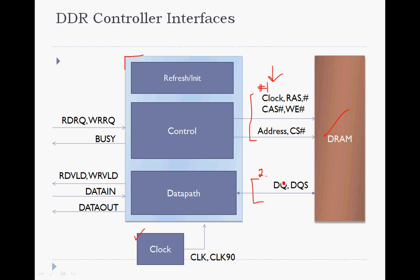The second group has the DQ and DQS, which are the ones that carry the data. The clock, command, address, and chip select carry the command and addressing of the transactions. On the other side we have the FIFO interface, which has the requests and the busy signal. Then you have the data, which may be a wide bus — 64 to 128 bits wide — with data in and data out and valid signaling.